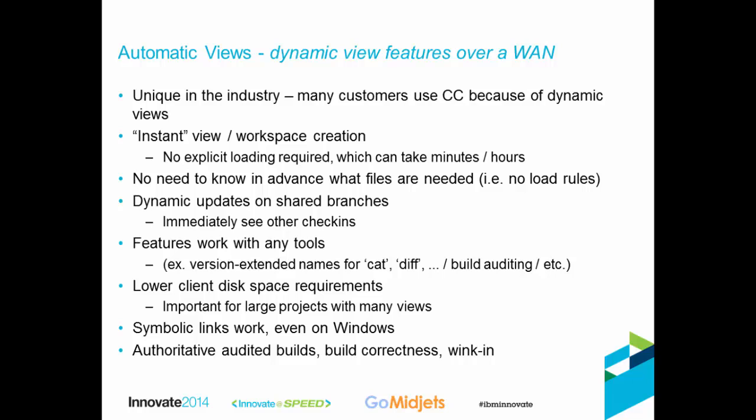Dynamic views also dynamically update when you're working on a shared branch with other developers. When someone else checks in on a branch that your config spec selects, you'll see those changes immediately. This is a feature we may decide to implement in automatic views at some point, but the first version of automatic views functions in a different way that I'll describe shortly.